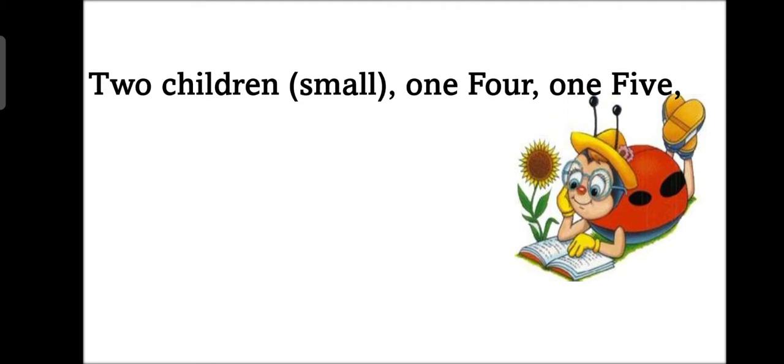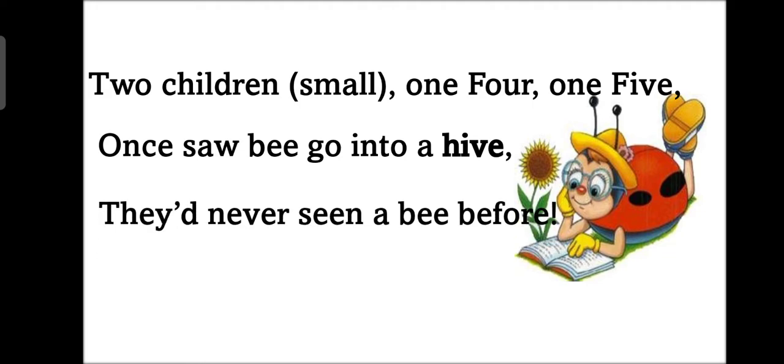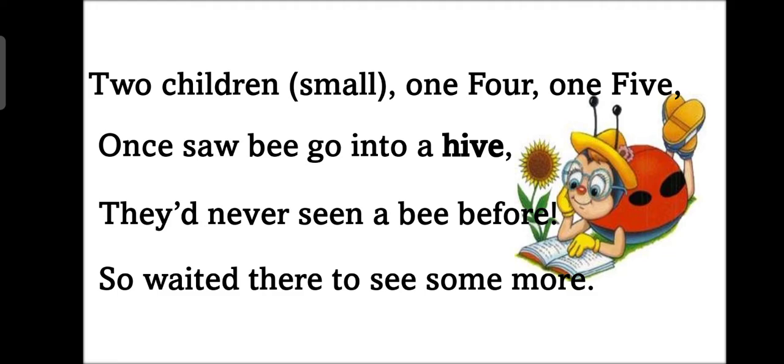So the first line is two children small, chhote chhote bachche hain. One four one five. Ek four years ka hai and second is five years. Once saw bee go into a hive. Ek baar unhonen bee ko dekha hive mein jate huye, it means bee ke ghar mein jate huye dekha. They had never seen a bee before. Unhonen kabhi bhi bee ko nahi dekha tha before, isse pahle unhonen kabhi bhi bee ko nahi dekha tha.